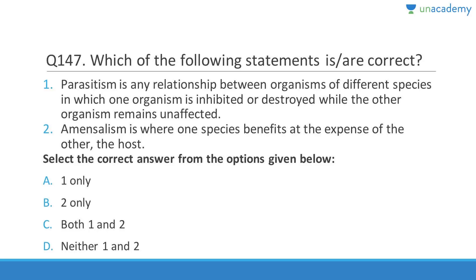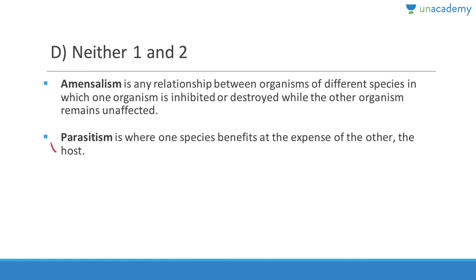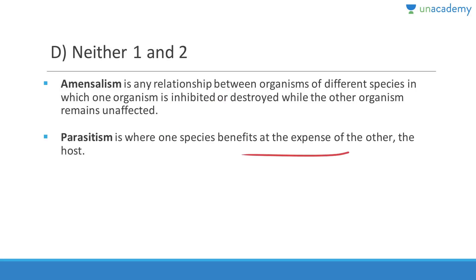Amensalism is any relationship between organisms of different species in which one organism is inhibited or destroyed while the other remains unaffected — for example, penicillium's allelopathic effect. Parasitism is where one species benefits at the expense of the other, which is called the host — for example, tapeworm or roundworms inside human beings. The answer is D — neither one nor two — because the descriptions were reversed.